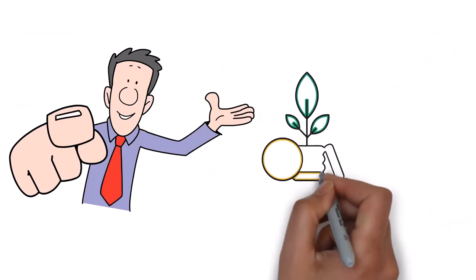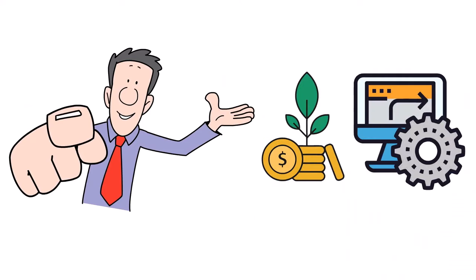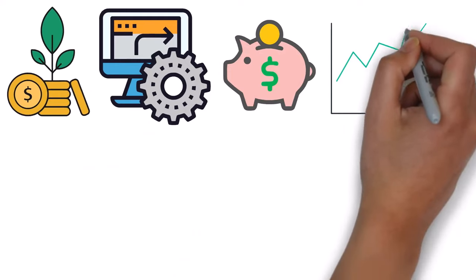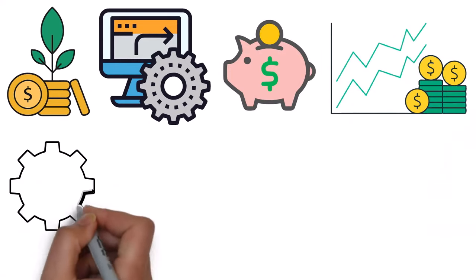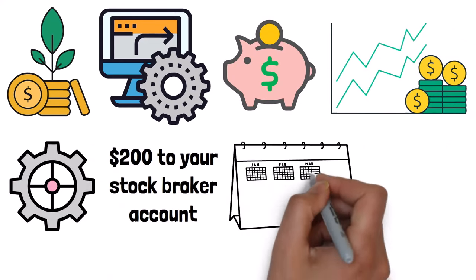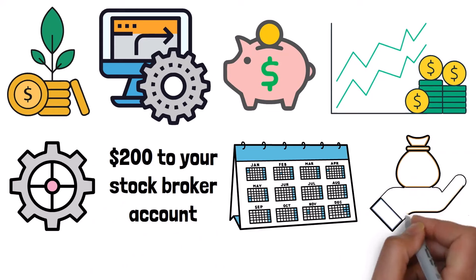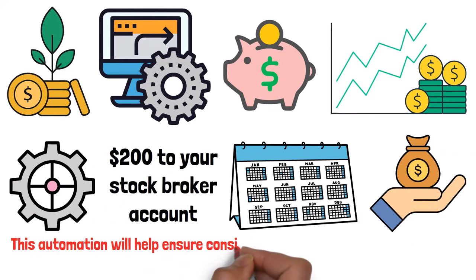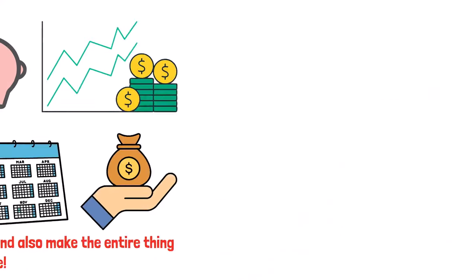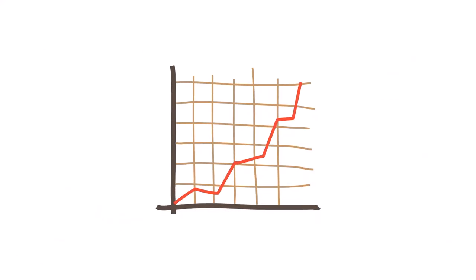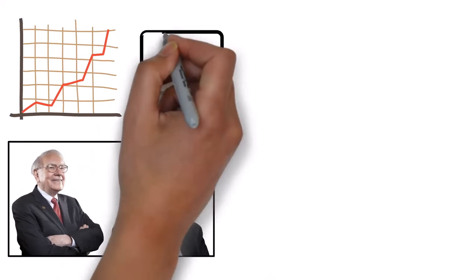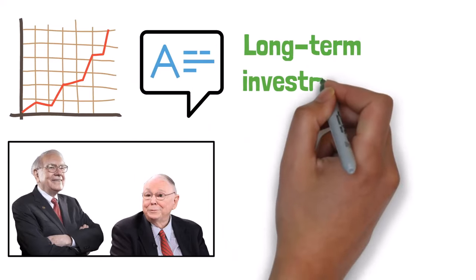Now that you know how to invest, my advice is that you create an automated system so that anytime money enters your account, part of it is automatically diverted to your index fund. For instance, you can set up a system that automatically deducts $200 to your stockbroker account every month when you receive your salary or income. This automation will help ensure consistency and also make the entire thing completely passive. However, do you really want to make it big in the stock market? How did billionaires like Warren Buffett and Charlie Munger do it? The answer is long-term investment.